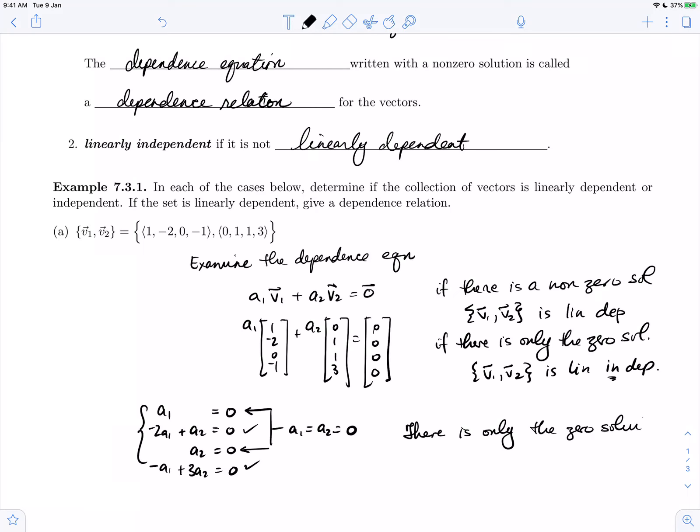And that zero solution is called the trivial solution. Since there is only the zero solution, no non-zero solution, the set v1, v2 is linearly independent.